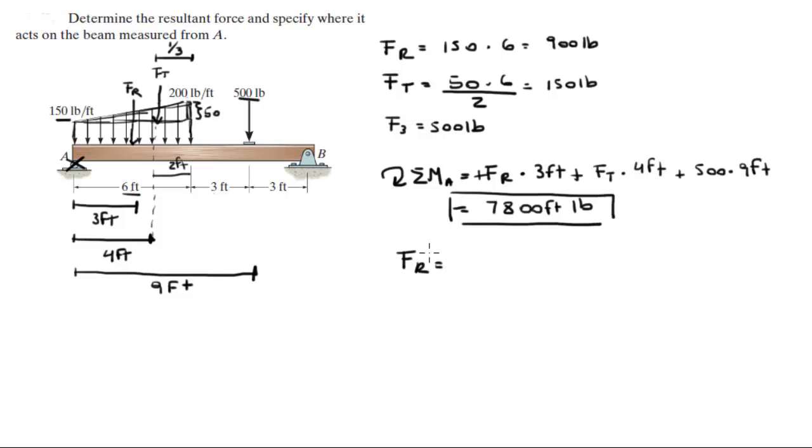You know that the resultant force is the addition of all the forces. So by adding the 900, the 150, and the 500, you get that it's equal to 1550 pounds.